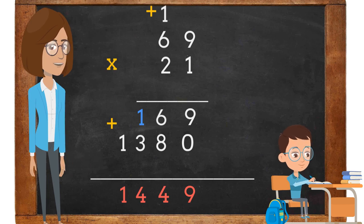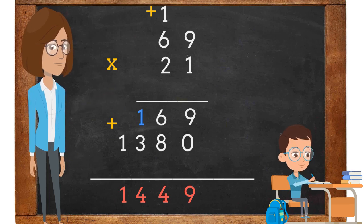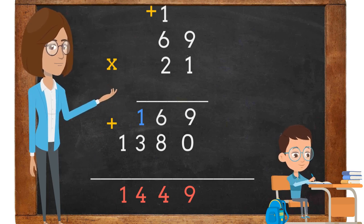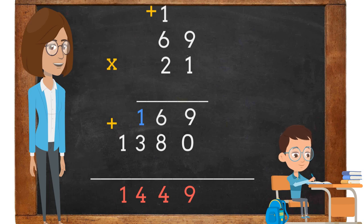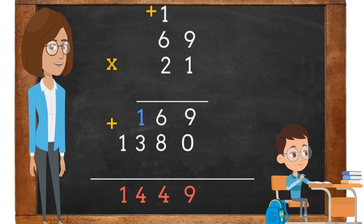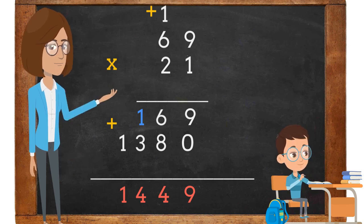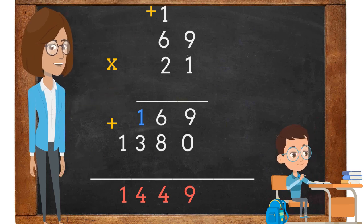Lastly, we are going to add. 9 plus 0 is 9. 6 plus 8 is 14. We place the 4 next to the 9 in the tens place and carry the 1 above the 3 in the hundreds place. 3 plus 1 is 4. Since we do not have any numbers above the 1 in the thousands section, we will bring the 1 down. The product of 69 times 21 is 1,449.